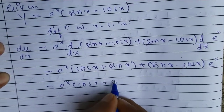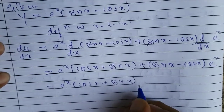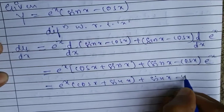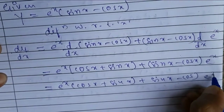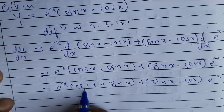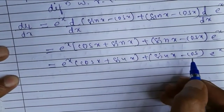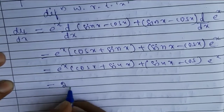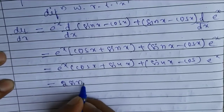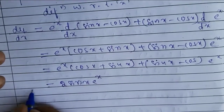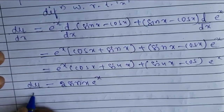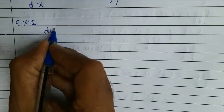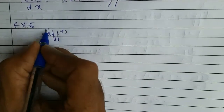So here, e to the power of x into bracket cos x plus sin x, plus sin x minus cos x into e to the power of x. Here plus cos x and minus cos x get cancelled, and sin x plus sin x gives us 2 sin x, so we are left with 2 sin x into e to the power of x. This is our final answer.